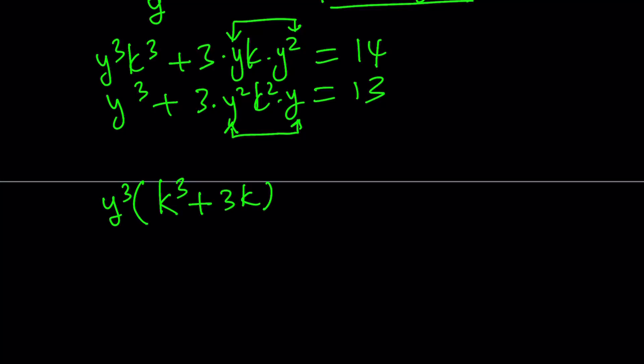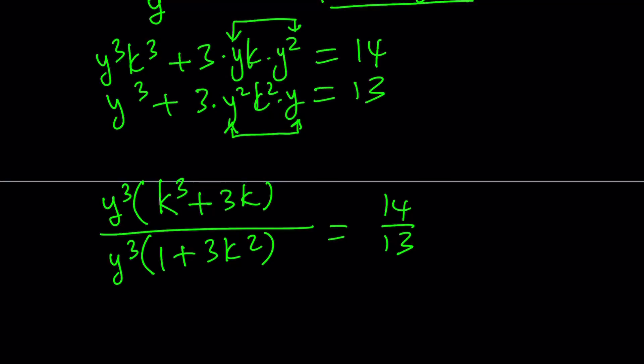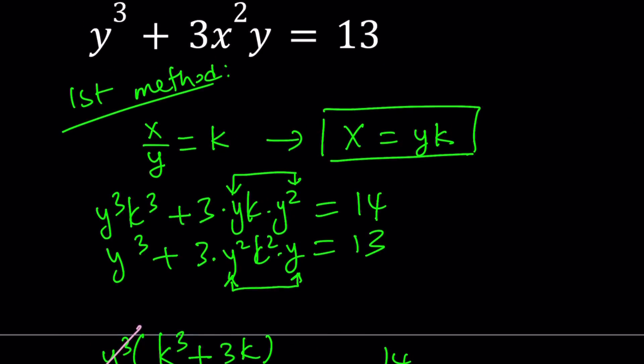And that gives us k cubed plus 3k. And what I'd like to do is I'd like to divide these equations. So let's go ahead and take out y cubed. It's going to give me 1 plus 3k squared. And this is going to equal 14 divided by 13. Now notice that y cubed cancels out. This is why it is a good method. It doesn't always work, obviously. For example, instead of 3x squared y, if we had 3xy, this method would not work nicely.